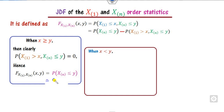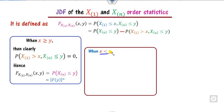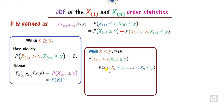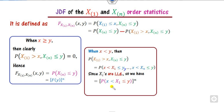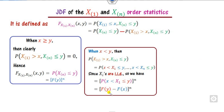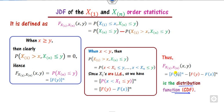So the CDF reduces to the CDF of X(n). We know the CDF of X(n) is F(y)^n — discussed in the last class. If x is less than y, then the expression is not zero. Since each of the X(i)'s are i.i.d., we can write P(a < X < b) = F(b) − F(a). Substituting, the required CDF of X(1) and X(n) is F(y)^n minus [F(y) − F(x)]^n.